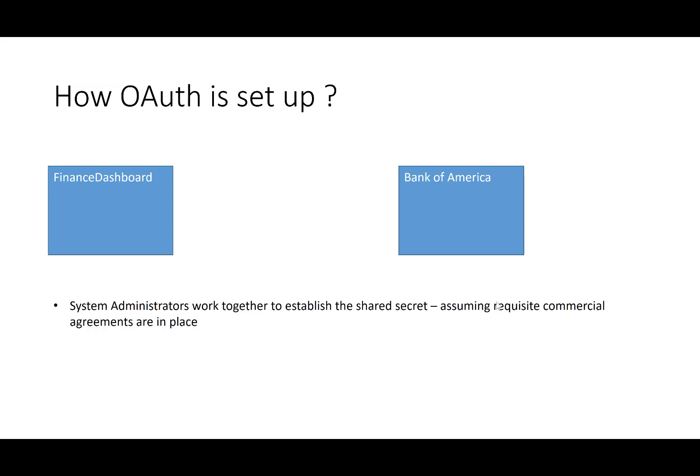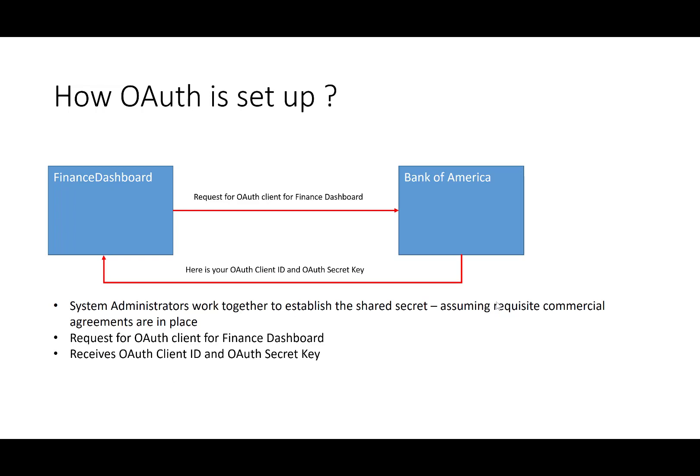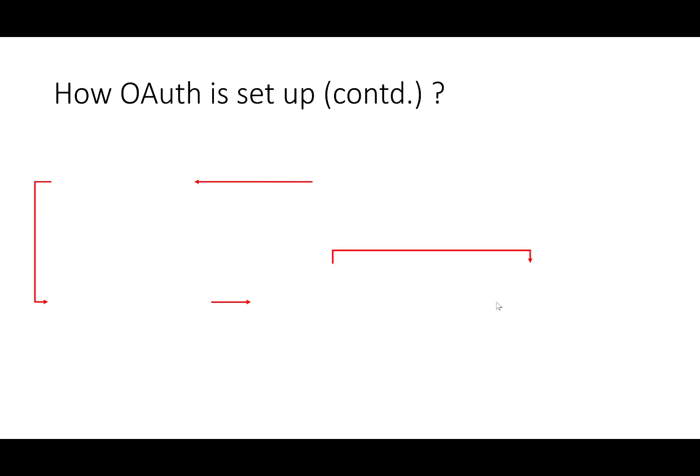How is OAuth set up? Even before John Doe comes into the picture, there needs to be some setup done between Bank of America and FinanceDashboard. The system administrators from both organizations work together to establish the shared secret, assuming requisite commercial agreements are in place. The system administrator from FinanceDashboard requests an OAuth client from Bank of America and receives the OAuth client ID and OAuth secret key. Once FinanceDashboard has those credentials, John Doe can sign up for FinanceDashboard services.